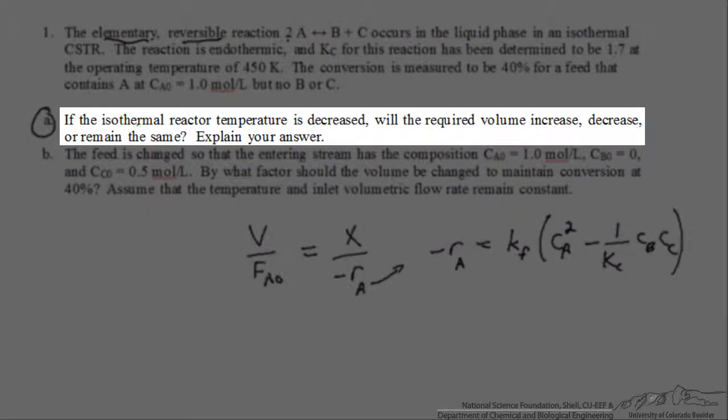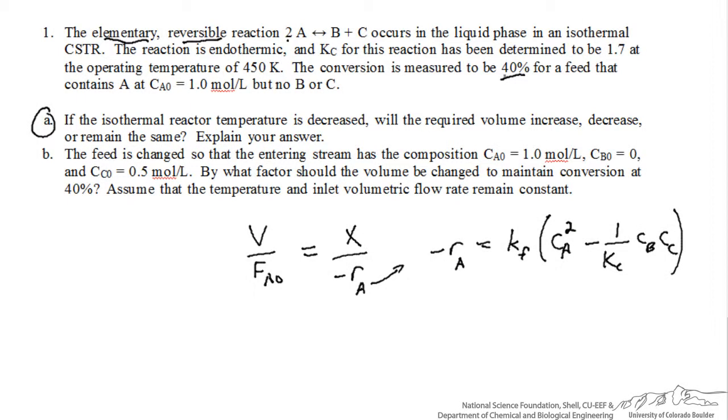This problem asks, if the isothermal reactor temperature is decreased, will the required volume to achieve a conversion of 40% increase, decrease, or remain the same? If we decrease the temperature, that's going to have a couple of effects.